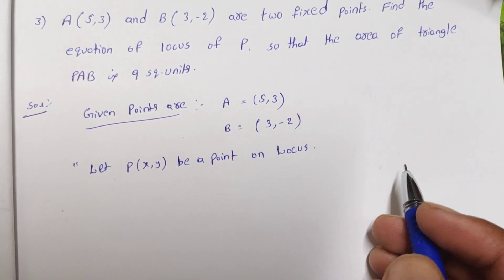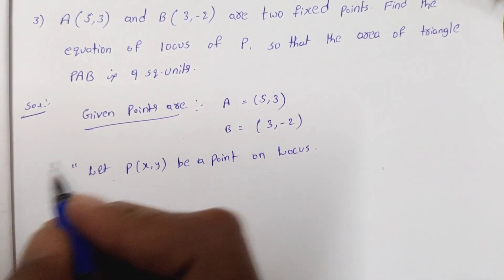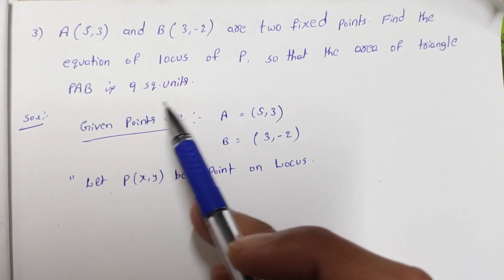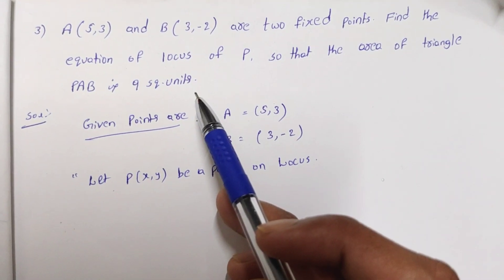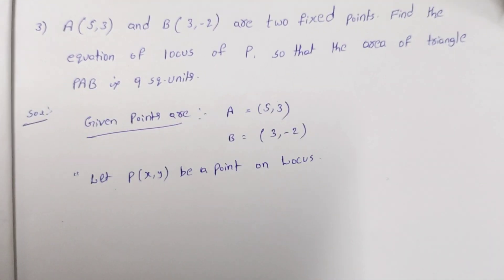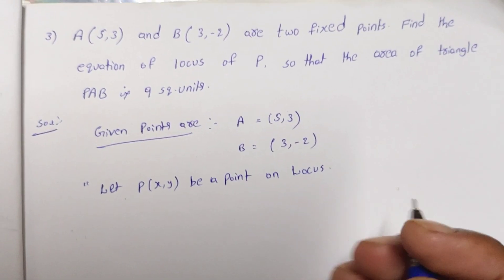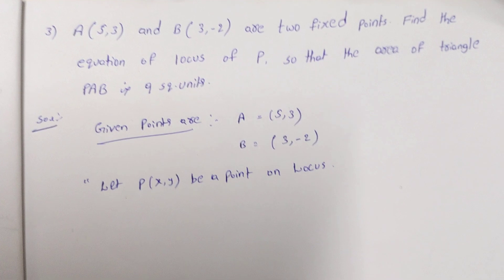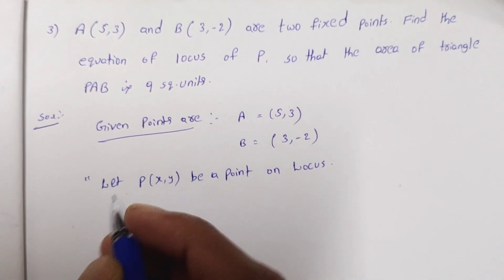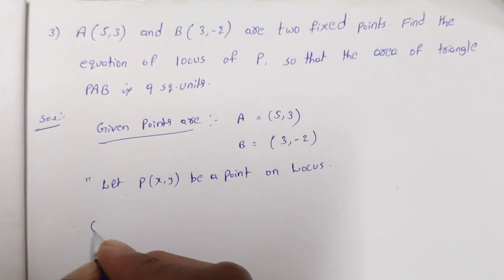And then the condition: the area of the triangle PAB is 9 square units. It means that the area of the triangle PAB is equal to 9 square units. That is the given condition.